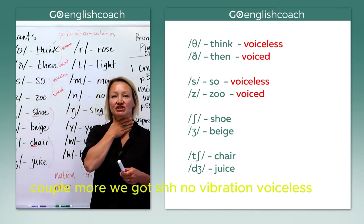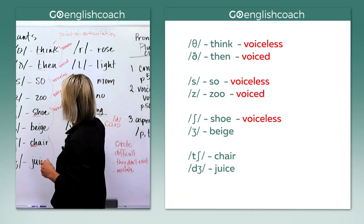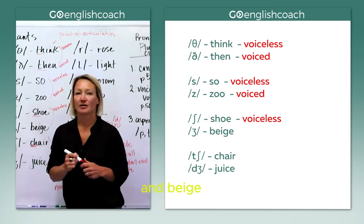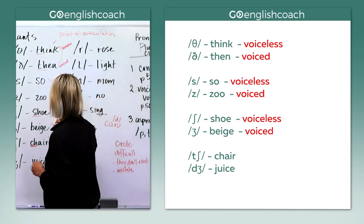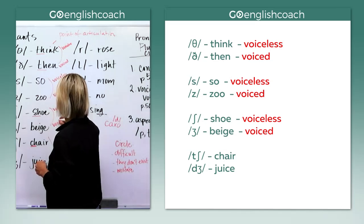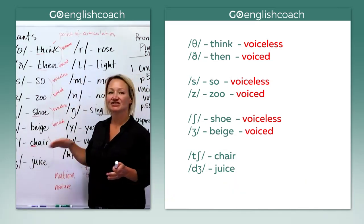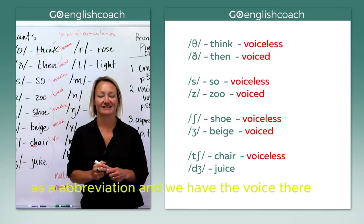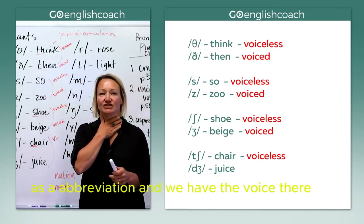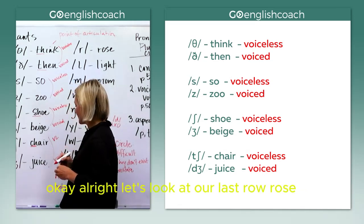A couple more. We've got 'shh' — no vibration, voiceless. And 'beige' — you can feel the vibration there. Thanks, you guys, we're doing great. 'Ch, ch' — nope, voiceless. I'm going to put VL as an abbreviation. And 'j' — we have the voice there.